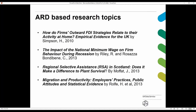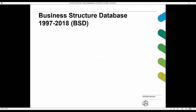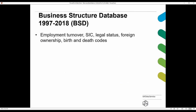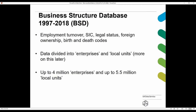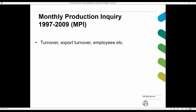The Business Structure Database (BSD) covers employment, turnover, Standard Industrial Classification code, legal status, foreign ownership, and birth and death codes. Data are divided into enterprises and local units, covering up to four million enterprises and up to 5.5 million local units. Geography ranges from government office regions down to postcode level. The BSD contains a small number of variables for almost all business organizations in the UK, derived from an IDBR snapshot complemented with ONS business surveys.